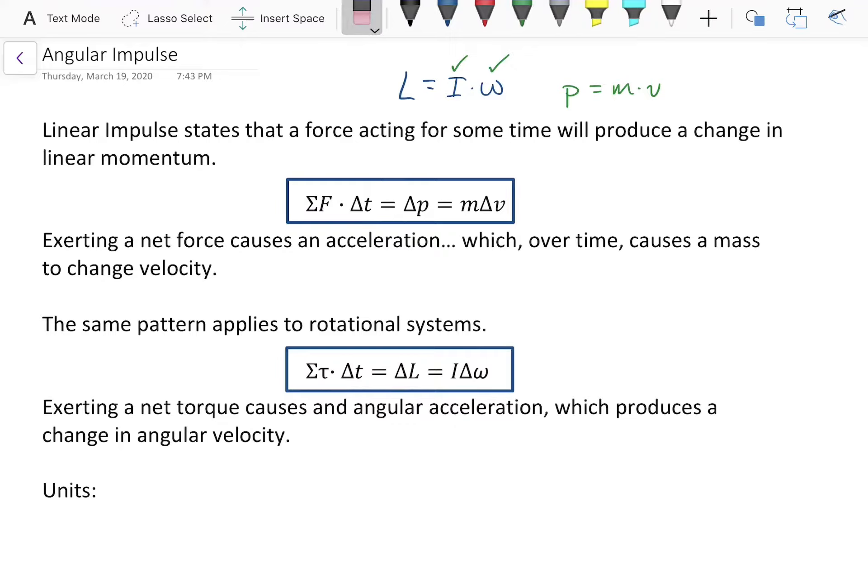All the equations pretty much work out the same, which means that impulse also works. So, in our linear systems, we have a force exerted for some time causes a change in momentum, that was the FATMAV equation, you might recall. Well, their rotational equivalent works, you just swap out every linear quantity for rotational quantity, and it still works.